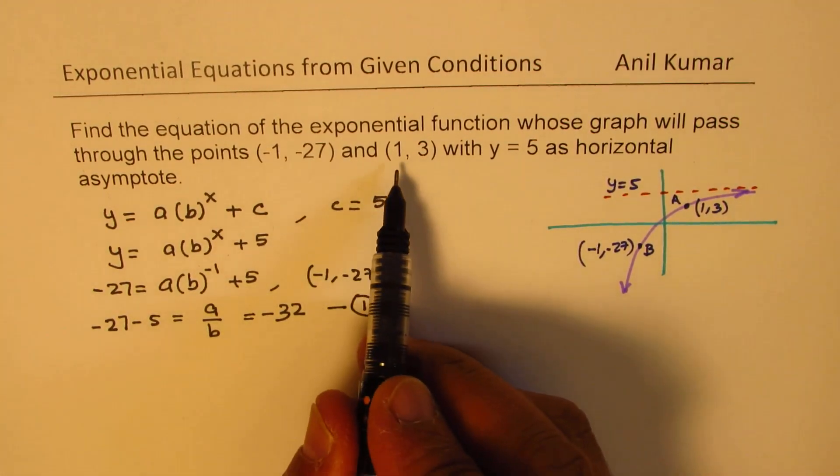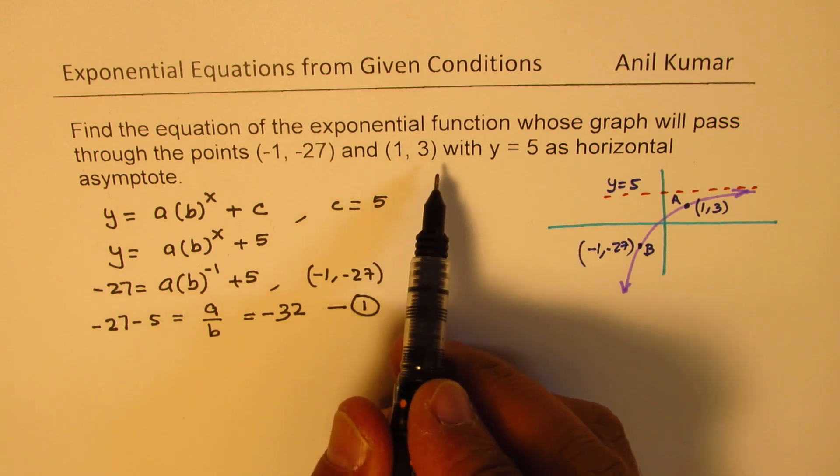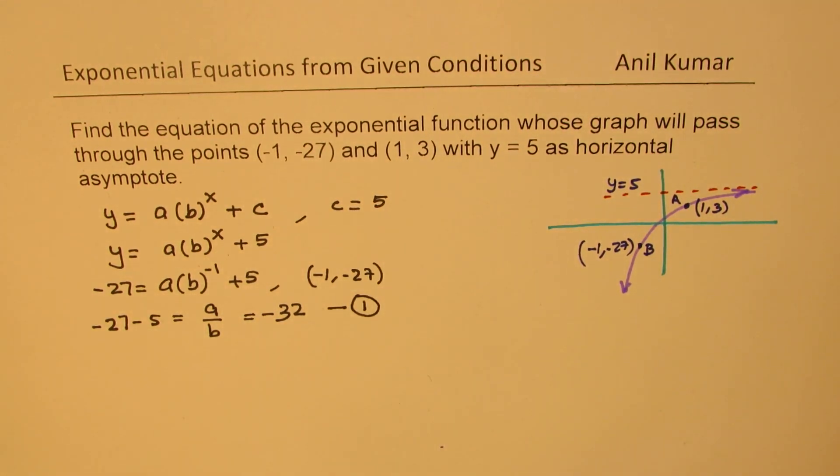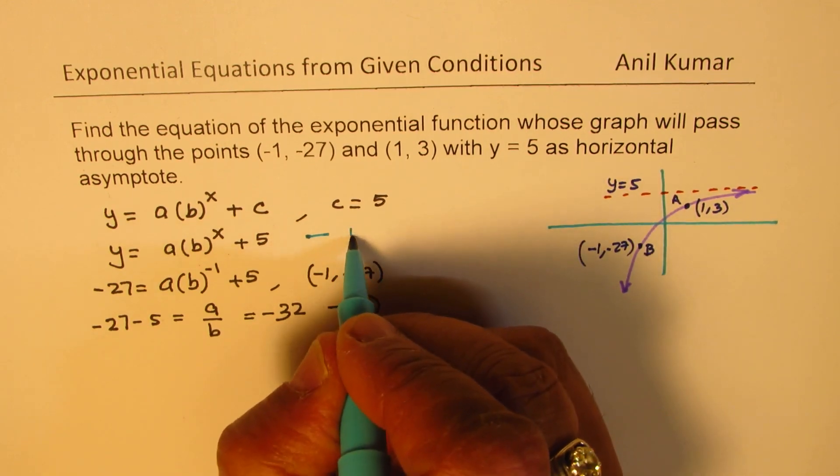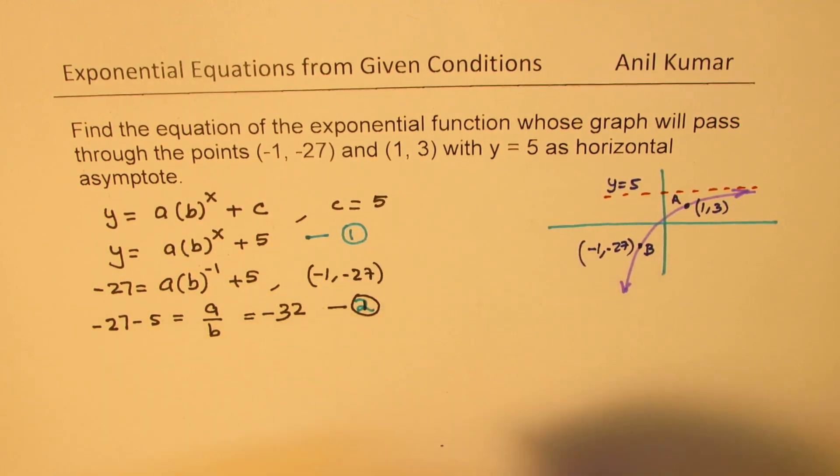We can get the second equation by substituting point (1, 3) in our equation. Let's call this the original equation. Let's call this 1 and let's call this 2.